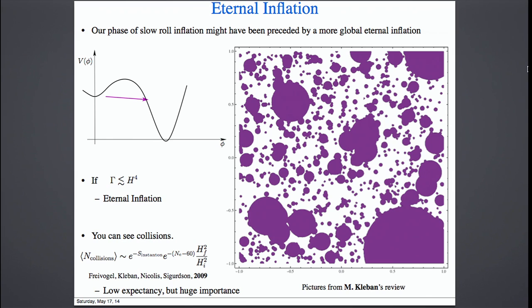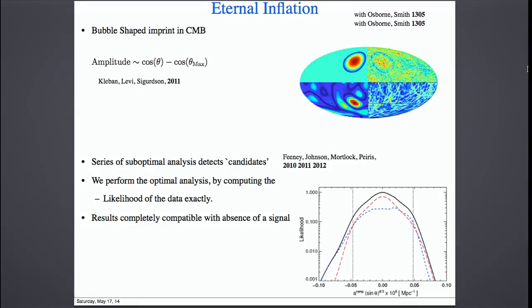This is, in my opinion, the most important thing going on in theoretical physics. Any possible signal is crucial. The signal computed is stable under the measure — it's very well-defined — and it's a disk-like shape in the CMB if there was a collision. The size is uncertain, but the shape is very much under control. There were a series of suboptimal analyses that detected a candidate, with some lively discussion that even went to the BBC.